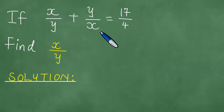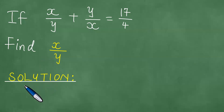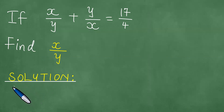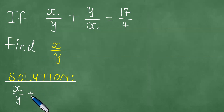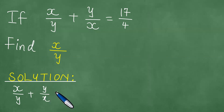If x over y plus y over x equals 17 out of 4, find x over y. To solve this question, we note down first things first the question, and we write the given equation in terms of x and y, which means what we have is that x over y plus y over x equals exactly 17 out of 4.